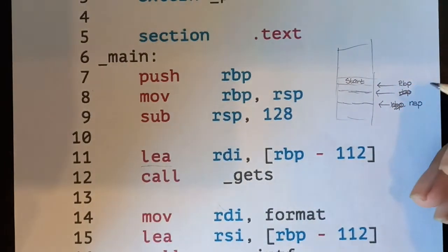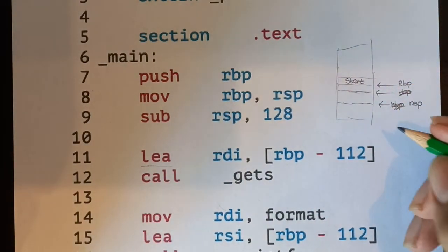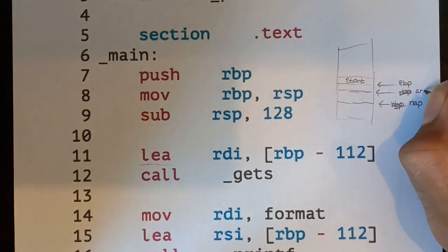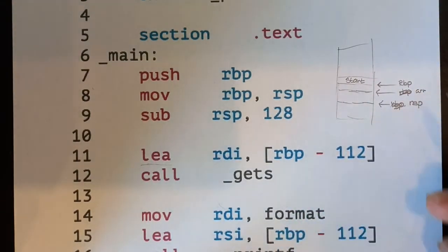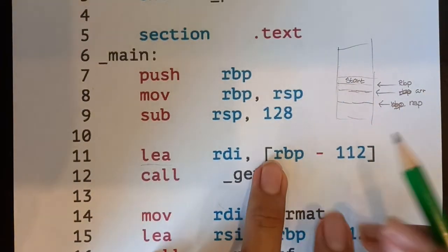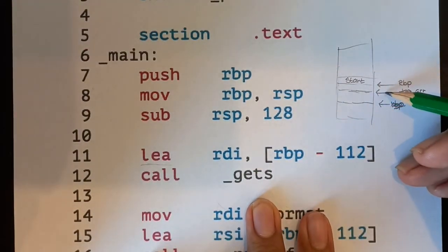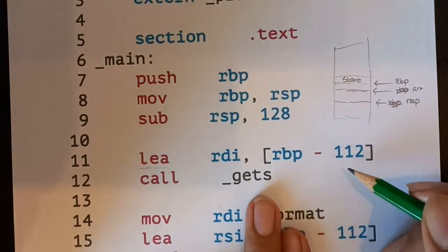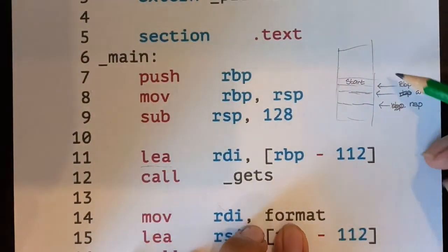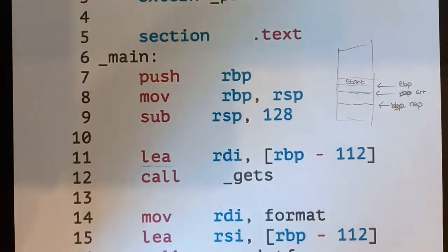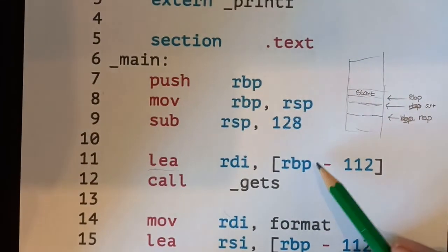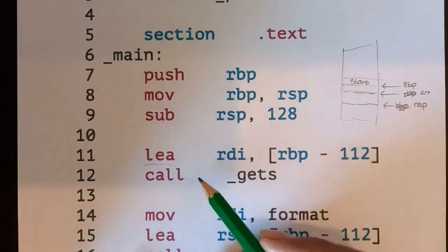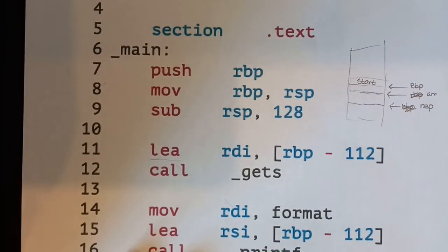So we're going to this place where our char array starts. So this is going to be our array. So this is now, so this thing RBP minus 112 is basically this location. And then we dereference it, which basically says, okay, now get me the first character in this array. That's basically what this is saying. And then we use the LEA instruction to get the address of that character.